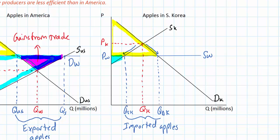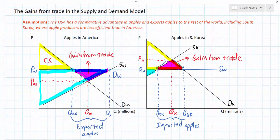Just like in the export market diagram, in the case of imports there is a net increase in total welfare — the area shaded in purple. The purple triangle represents the gains from international trade South Korea enjoys because it has opened its apple market to imports from the rest of the world. In our production possibilities lesson we showed gains from trade as an outward shift in the PPF; in our supply and demand diagrams we show them as increases in producer surplus for an exporting country and increases in consumer surplus for an importing country. The increase in total welfare in both graphs represents the gains from trade that the United States and South Korea enjoy from specialization and trade in apples.